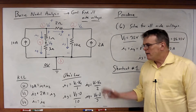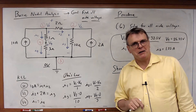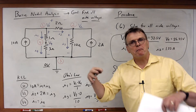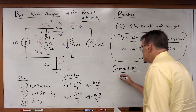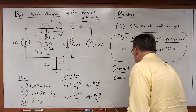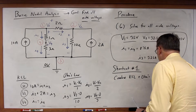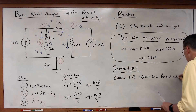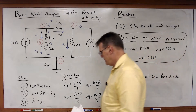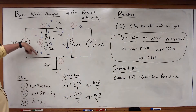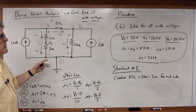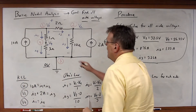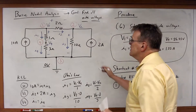What is shortcut number one? It's something that I've already showed you how to do. Instead of writing the KCL and Ohm's Law equations separately, let's write them by combining those together into an equation — combining KCL plus Ohm's Law for each node. In this case, I'm going to ignore the I1, I2, I3, and I4 variables.